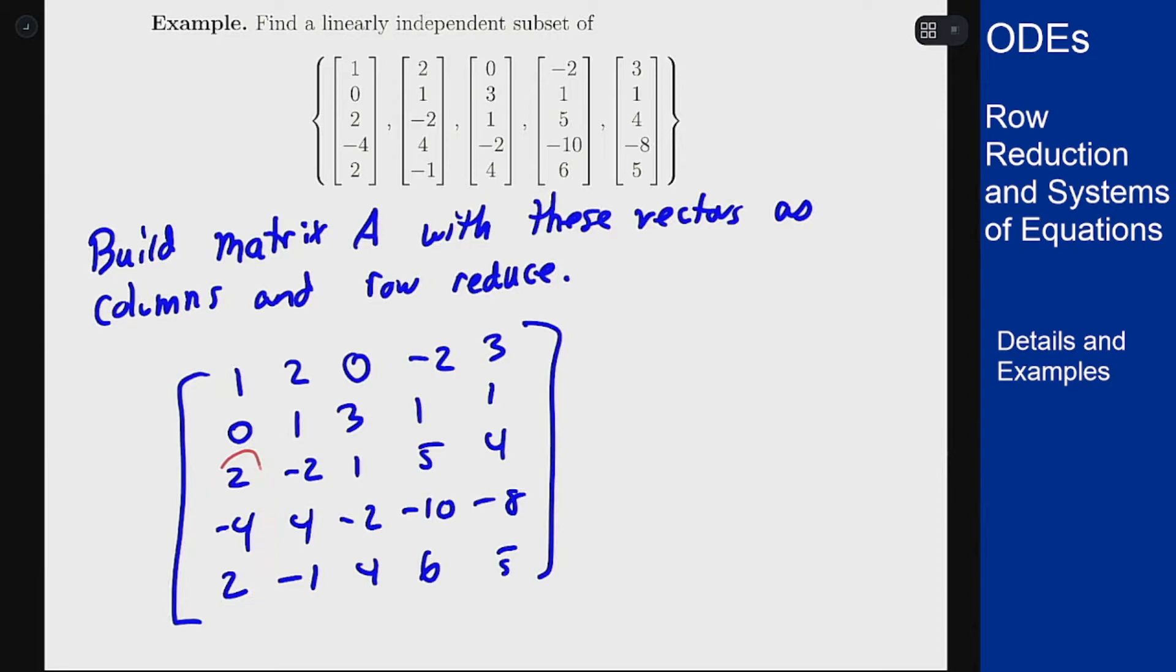So what I want to do for my first operation here is I want to set row 3 equals row 3 minus 2 row 1. That'll get rid of that 2. Row 4 is row 4 plus 4 row 1, and row 5 is row 5 minus 2 row 1.